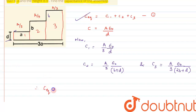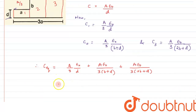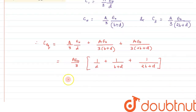Substituting the values to get C_eq: C_eq = (Aε₀/3d) + (Aε₀ / 3(b+d)) + (Aε₀ / 3(2b+d)). Taking Aε₀/3 as common, we are left with: C_eq = (Aε₀/3) × [1/d + 1/(b+d) + 1/(2b+d)].